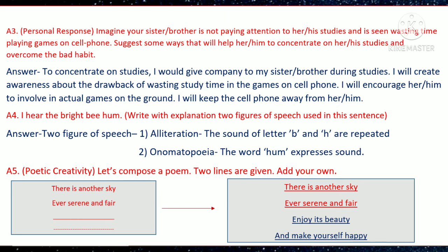Question A5 is on poetic creativity. Compose a poem — two lines are given, add your own lines. The given lines are: 'There is another sky, ever serenity and fair.' Students are expected to add their own creative lines to complete the poem.